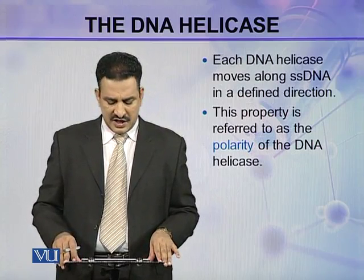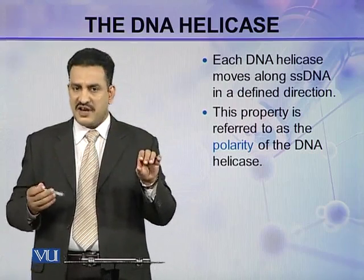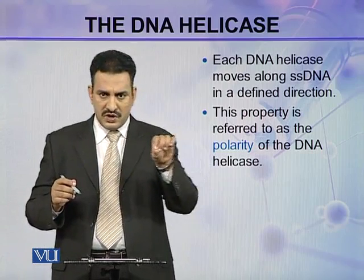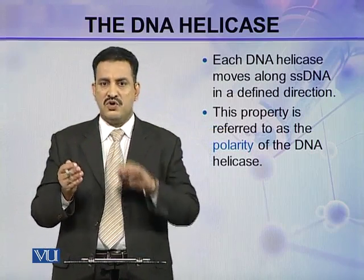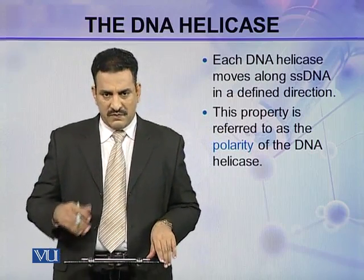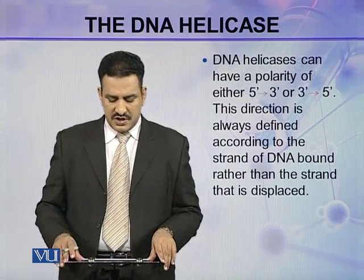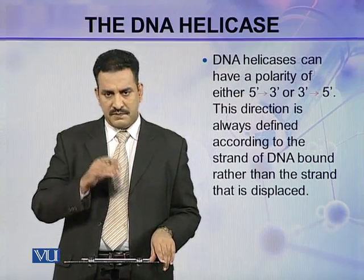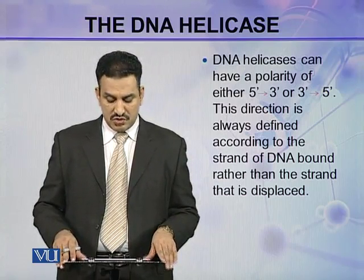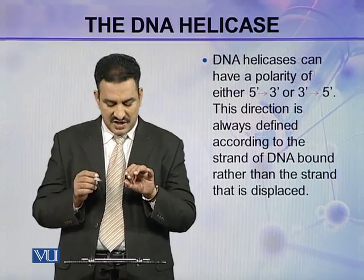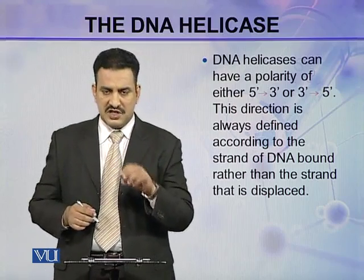Each DNA helicase moves along single-stranded DNA in a defined direction — either from 5' to 3' or 3' to 5'. This property of the helicase is referred to as the polarity of the DNA helicase. DNA helicases can have a polarity of either 5' to 3' or 3' to 5', and this direction is always defined according to the strand of DNA that is bound rather than the strand that is displaced.